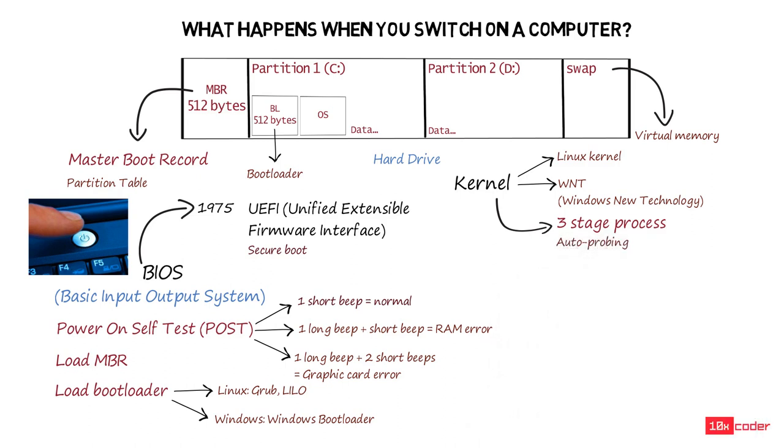In the first stage, the kernel performs a test known as auto-probing. Auto-probing simply means to check if other hardware components such as Wi-Fi card, Ethernet card, hard drives, keyboard, mouse, etc. are working correctly or not. Once auto-probing is done,